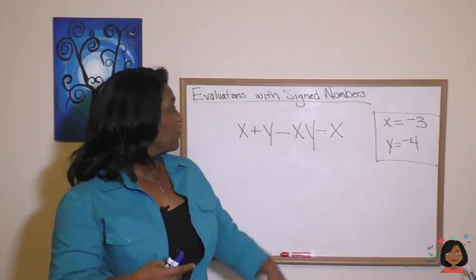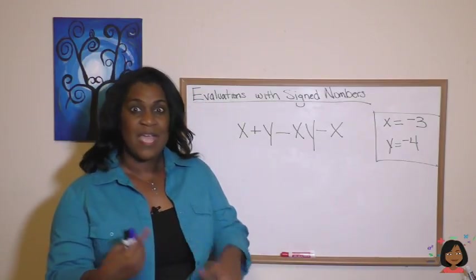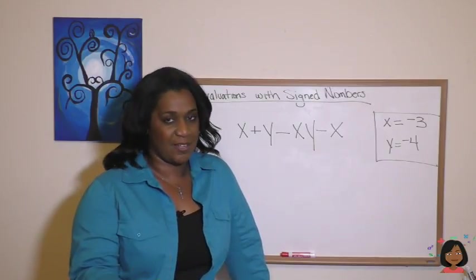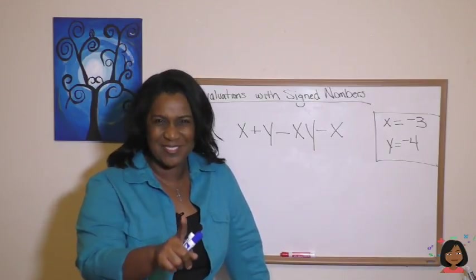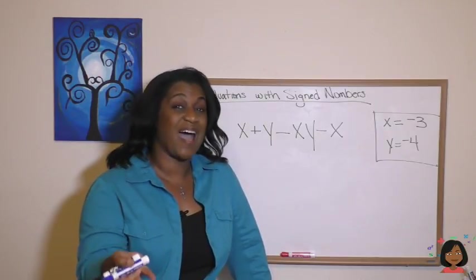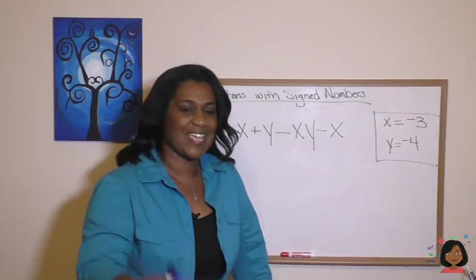Let's get started with the first one, the evaluations with signed numbers. Now, up until now, we have been doing evaluations with positive numbers. But this time we are going to use both a mixture of positive and negative. Take a look.